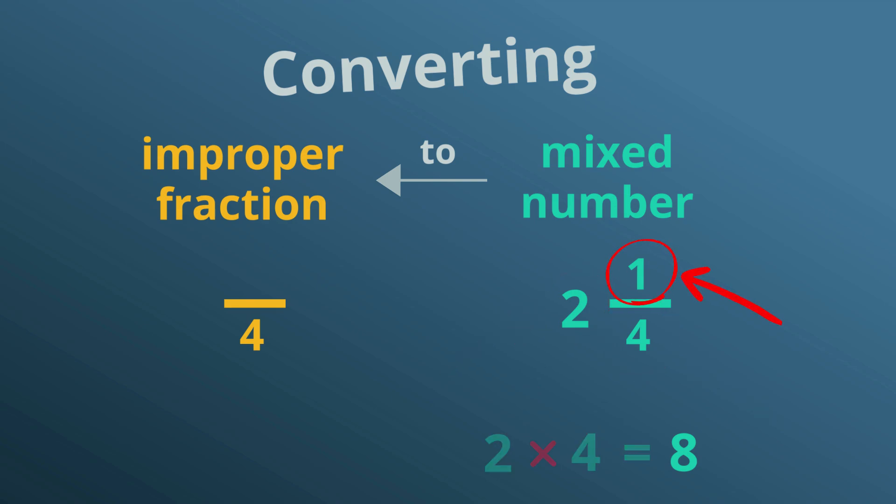Then we add the numerator, which is one, to this number. Eight plus one is nine. This is the numerator of our improper fraction. Two and a quarter as an improper fraction is nine quarters.